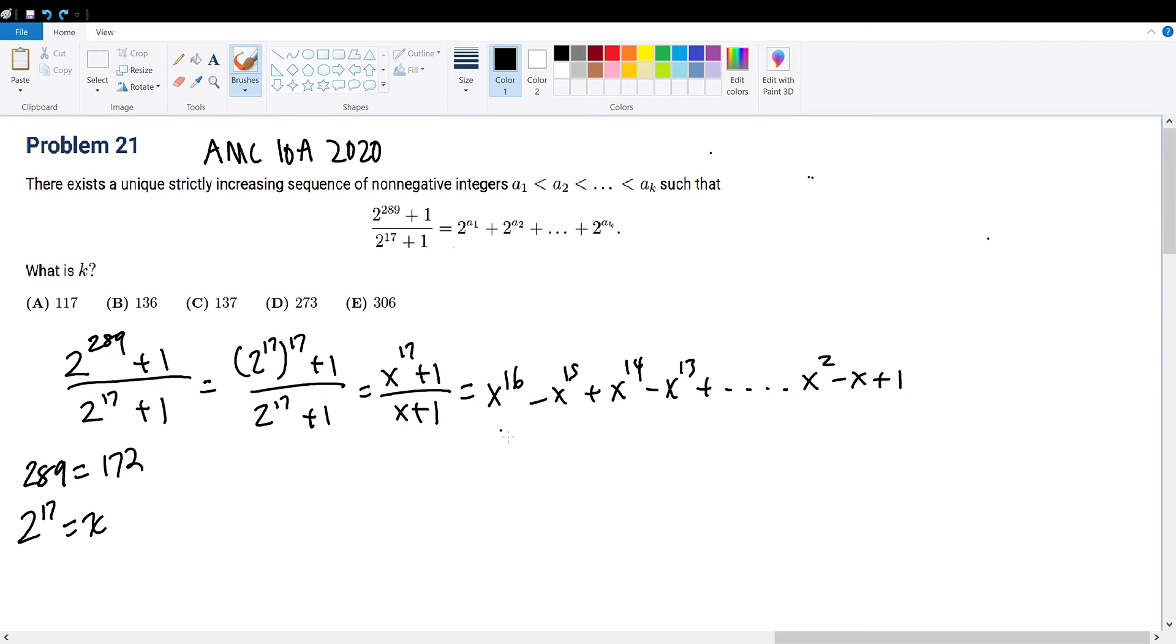So let's work backwards. x to the 16th times x plus 1 gets x to the 17th plus x to the 16th. But we have an extra x to the 16th that we don't want. So we multiply it by a negative x to the 15th to subtract x to the 16th out. But then we're left with another negative x to the 15th. So we get that out by multiplying by a positive x to the 14th to add it away. You see where this pattern goes and you see why this sequence is correct.